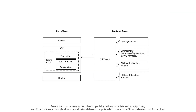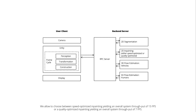To enable broad access to users by compatibility with usual tablets and smartphones, we offload inference through all four neural network-based computer vision models to a GPU-accelerated host in the cloud. We allow choosing between speed-optimized inpainting yielding an overall system throughput of 15 frames per second, or quality-optimized inpainting yielding an overall system throughput of 7 frames per second.